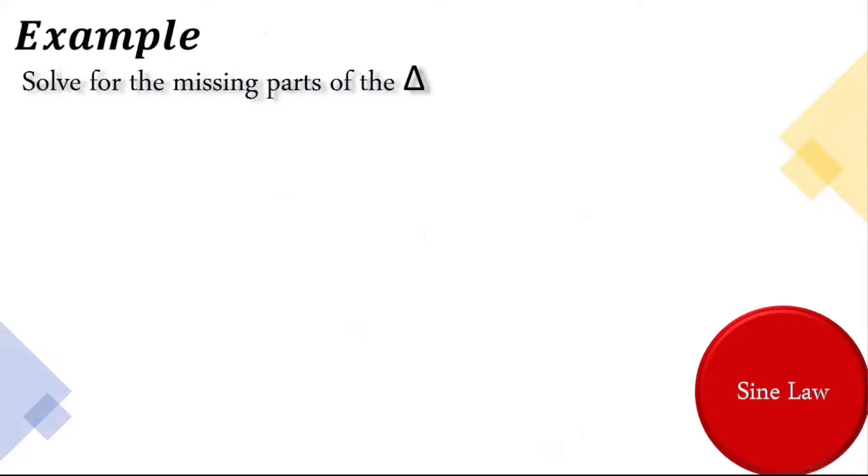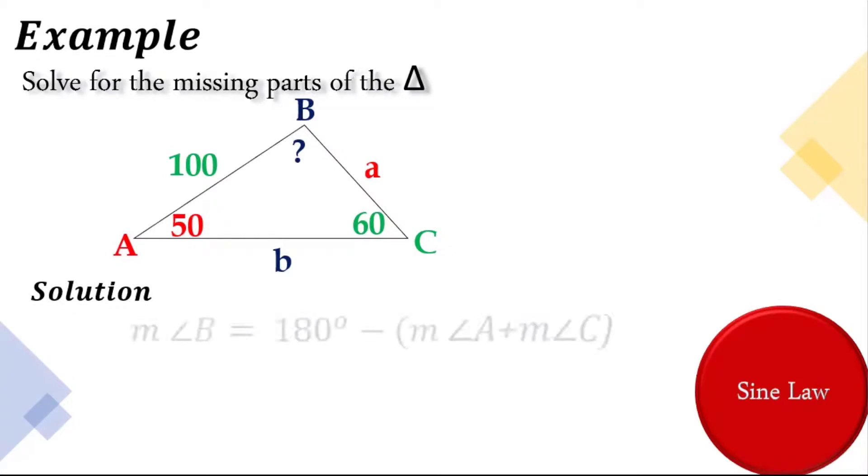Solve for the missing parts of the triangle. So here's our given triangle, which is the measurement of angle B, side a, and side b are all missing. Here is our solution. To find the measurement of angle B.